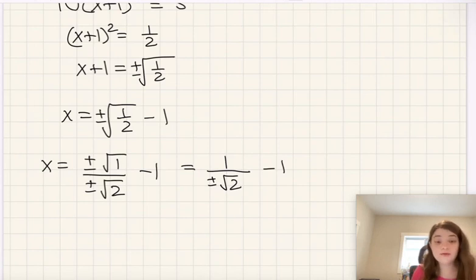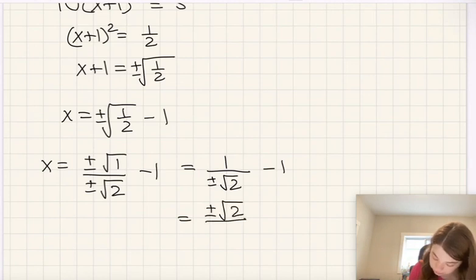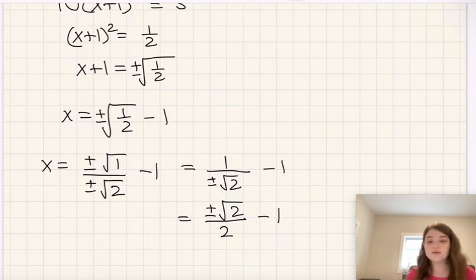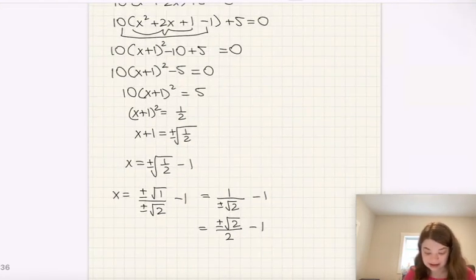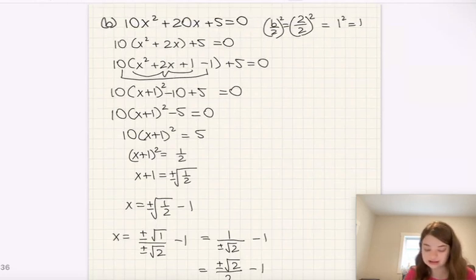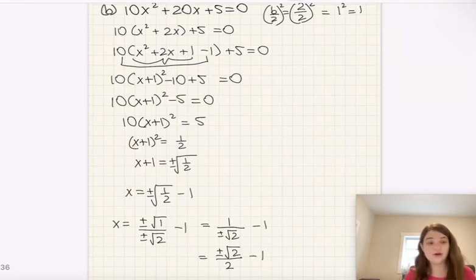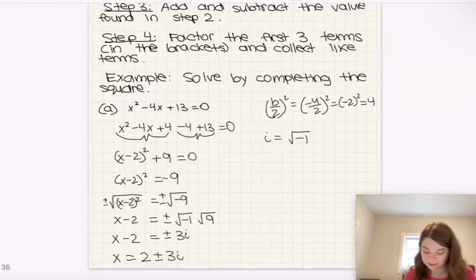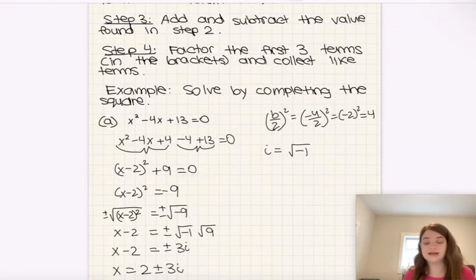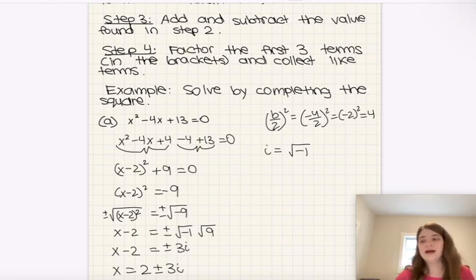Let's fix that. We rewrite as plus or minus 1 over the square root of 2, then multiply both numerator and denominator by root 2, giving us plus or minus root 2 over 2, minus 1. That is our final answer in proper form. In this case, because we ended up with a positive under the square root, we didn't get any complex solutions — not all quadratics will have complex solutions. Sometimes you get real solutions, sometimes complex; you won't know until you work it out or find the discriminant, which is a quicker way to determine that.